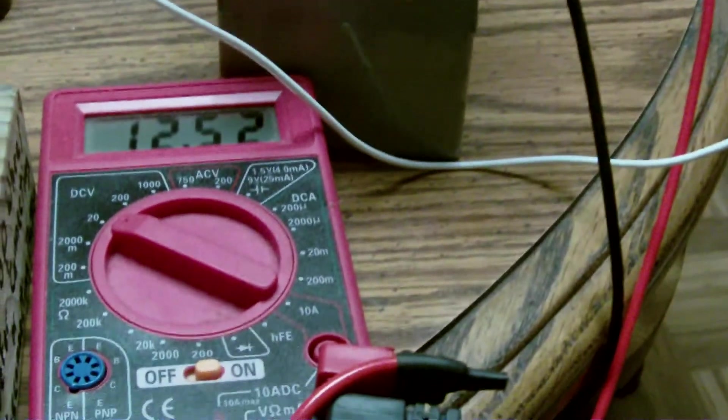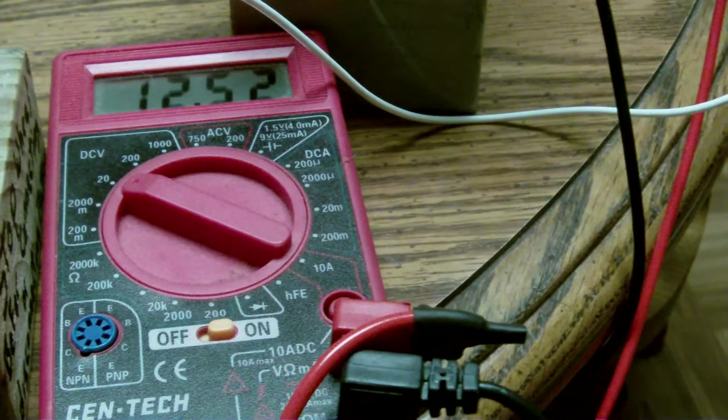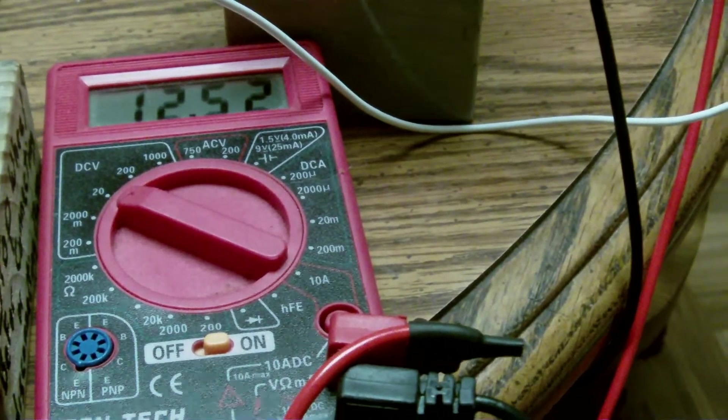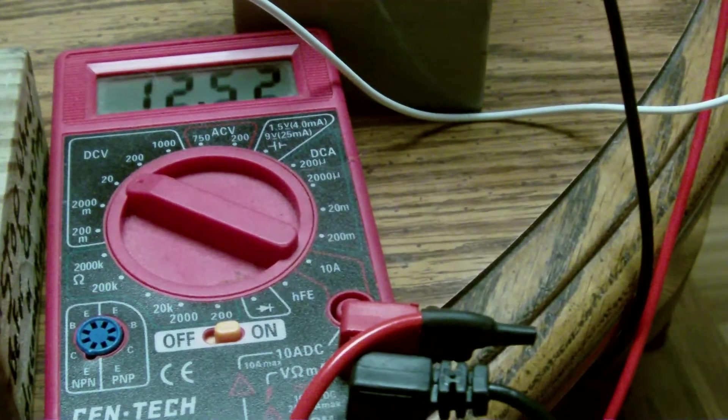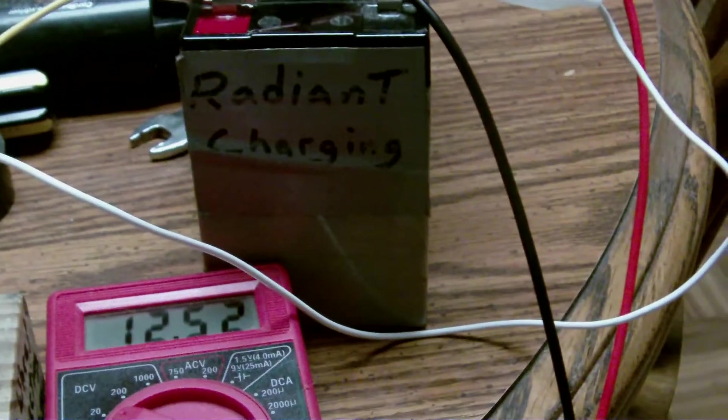Right now my 12 volt battery is sitting here and it'll go from 12.520 to 12.530. It started off at 12.5 but I've just been playing with the Bedini, spinning it by hand and watching a 6 volt battery charge a 12 volt battery.